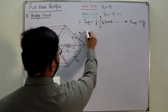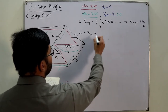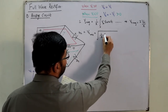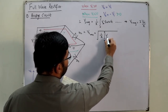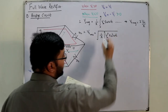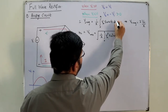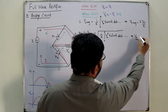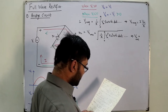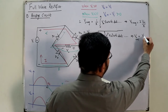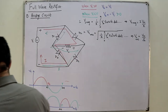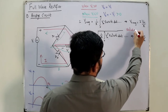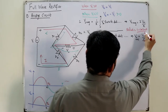For V₀_RMS — the root mean squared value — the formula is: V₀_rms = √[(1/π) ∫₀^π Vm²·sin²(ωt) d(ωt)]. Using the identity sin²(ωt) = (1 − cos(2ωt))/2, this evaluates to V₀_rms = Vm/√2.